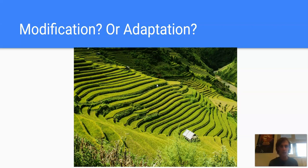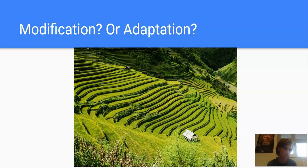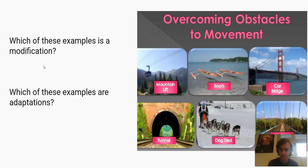So let's compare modifications with adaptations. Here you have an example of terrace farming, where people have cut out little steps to farm in a mountain environment. Would this be a modification or an adaptation? If you're thinking modification, you are correct — people have actually changed the landscape here to adapt to their environment. Here are some other examples: a mountain lift, a boat, a bridge, a tunnel, a dog sled, or even a walking bridge. Which of these are modifications? Which are adaptations?